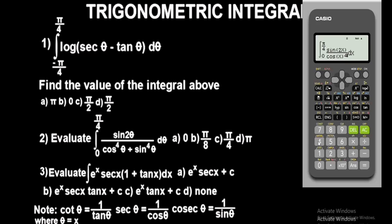For cos to the power of 4 theta, rather than multiplying cos x four times, represent it as cos(x) in brackets raised to the power of 4 — it's the same thing. So enter cos x in bracket to the power of 4. That's it. Press equals to see the output.